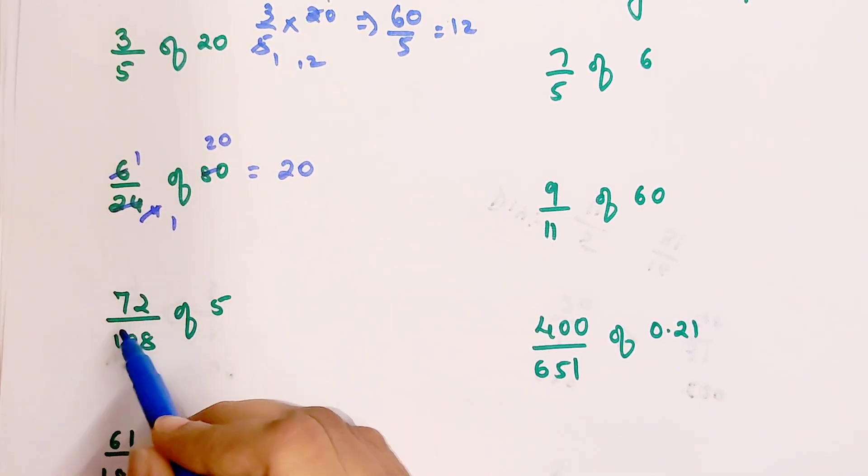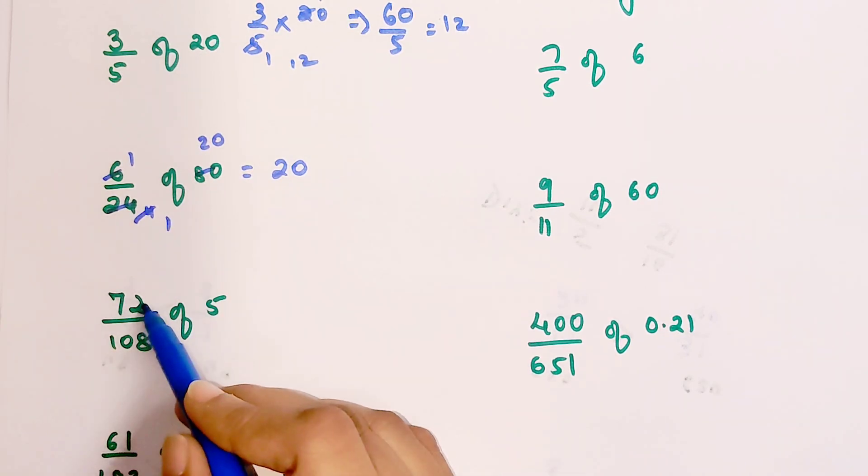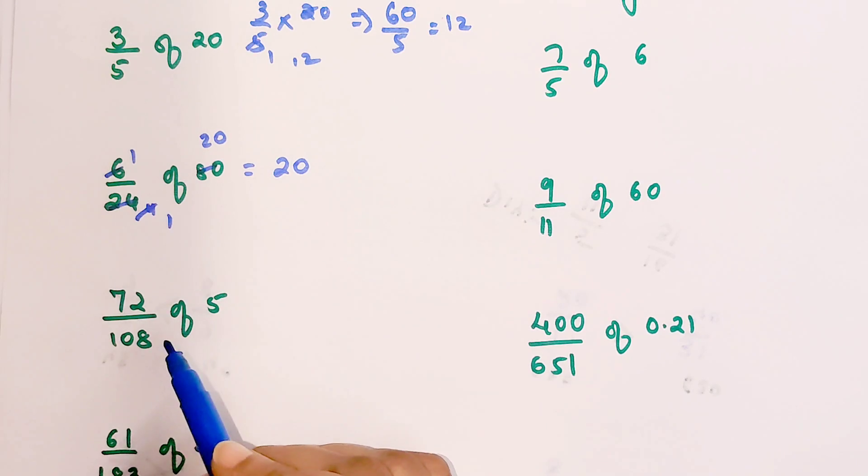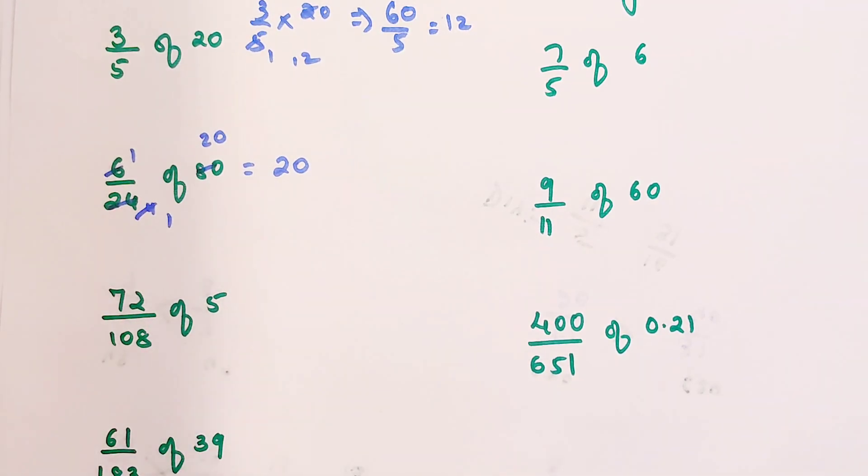Next one: 72 upon 108 of 5. Now I know 5 is a prime number which goes in neither of these two tables. But if you look closely, 72 and 108 are both even numbers. For those who aren't very confident, you can start by striking out with the 2 table, and if you go one step further, both can go in the 3 table as well.